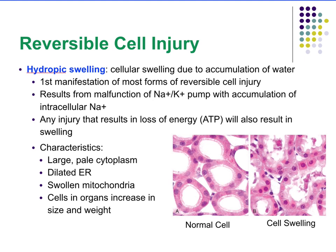Hydropic swelling is characterized by enlarged cells with pale cytoplasm. Their organelles become swollen as well — the ER is dilated, the mitochondria is swollen — and the entire organ that the cells are in will also increase in size and weight.